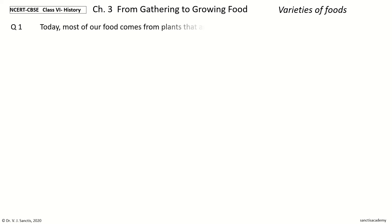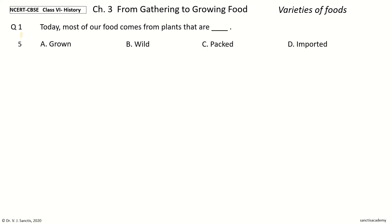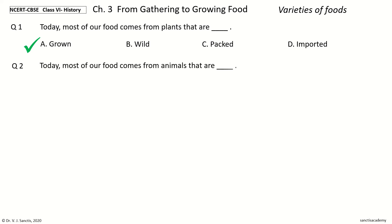Question 1: Today most of our food comes from plants that are dash. The options are: grown, wild, packed, imported. And the answer is grown.